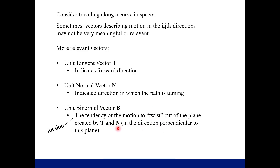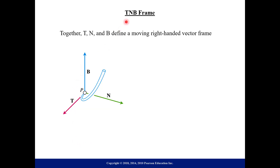Here's a calculation for how to find the binormal vector: it's the cross product of T and N, so by definition of the cross product it gives you a vector perpendicular to both T and N. There's also an alternate formula using your velocity and acceleration vectors — if you know your position vector function you can find velocity and acceleration and plug them into this formula to find the binormal vector.